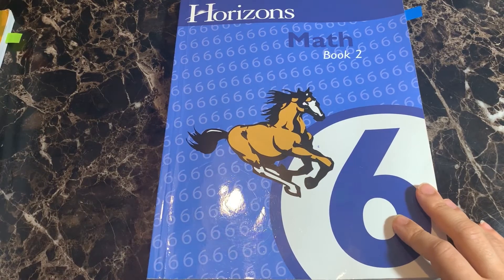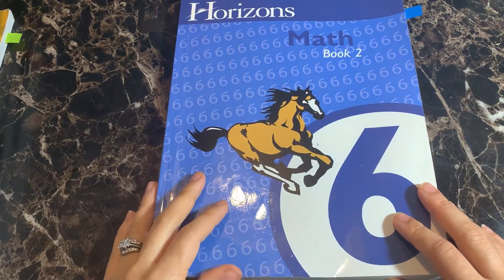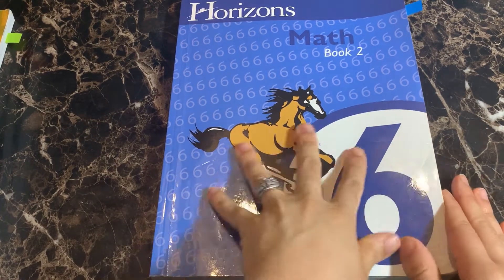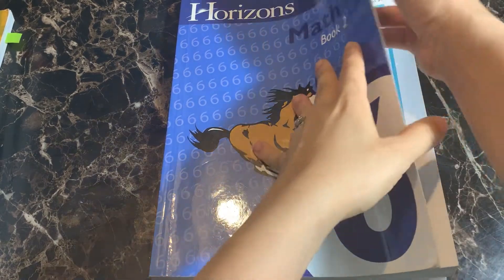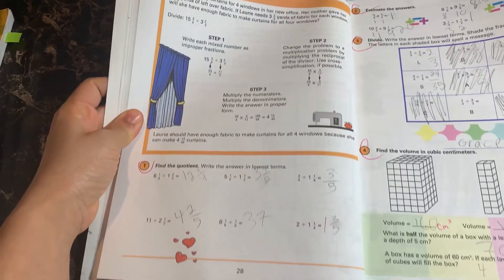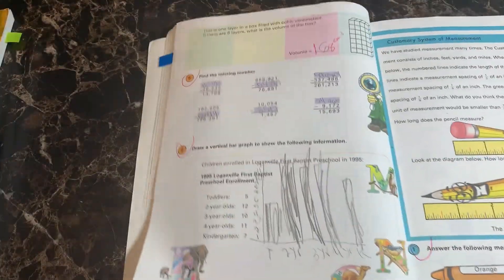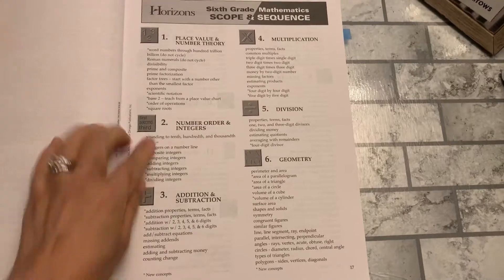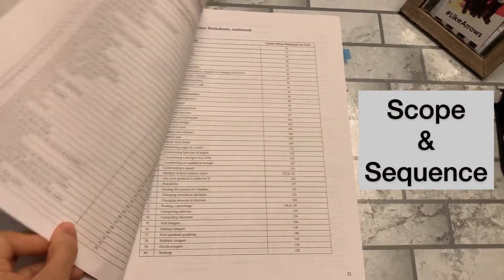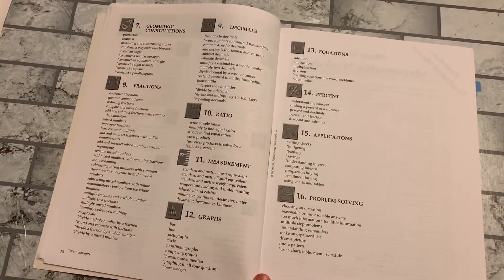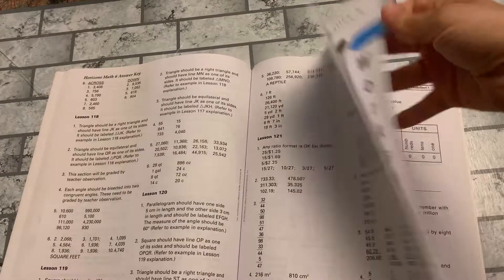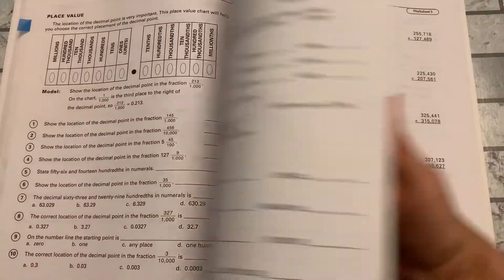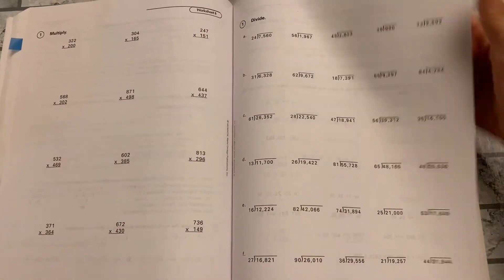Lastly, I'll show you a look inside the sixth grade level, which is the final level kind of in this setup. I know horizons also does have a pre-algebra course. I've never used it. I don't know too much about it, but I know in this kind of setup, sixth grade is the final level. I do not have book one, unfortunately to show you, but I'll show you a lesson in book two. Again, you see it's one page, two pages, three pages. So very similar.